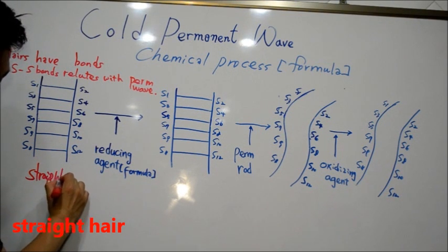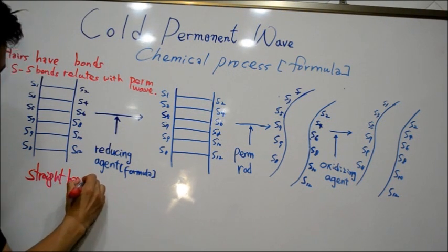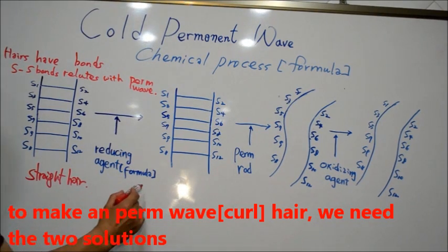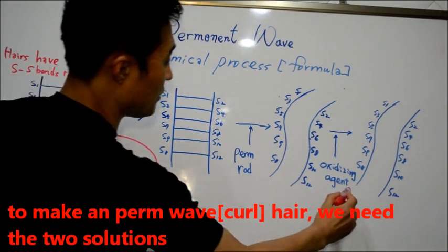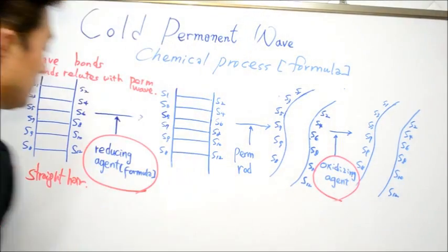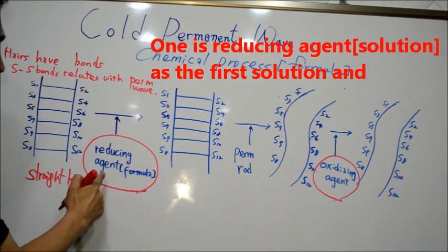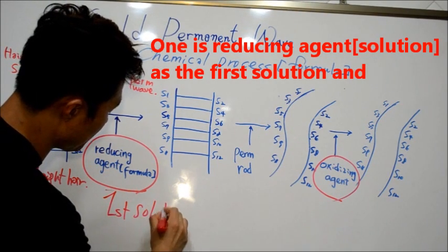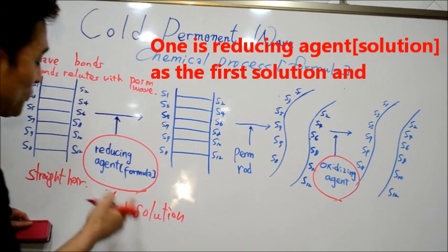To make a perm, we need two solutions. One is reducing agent solution. First solution is reducing agent.